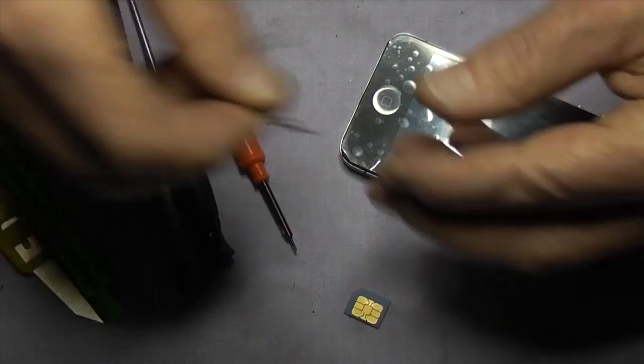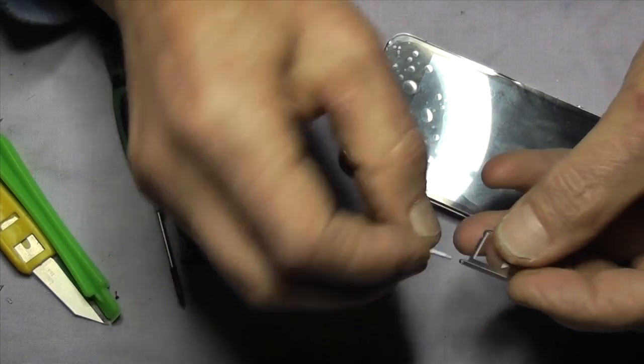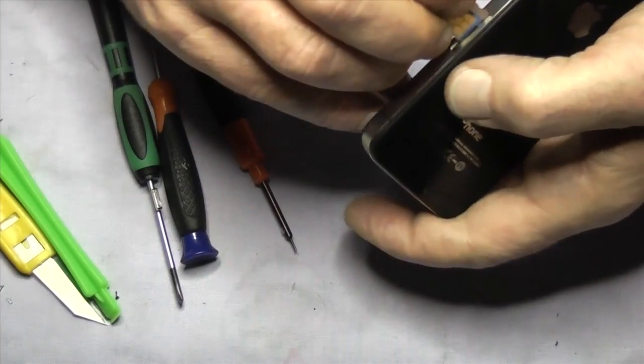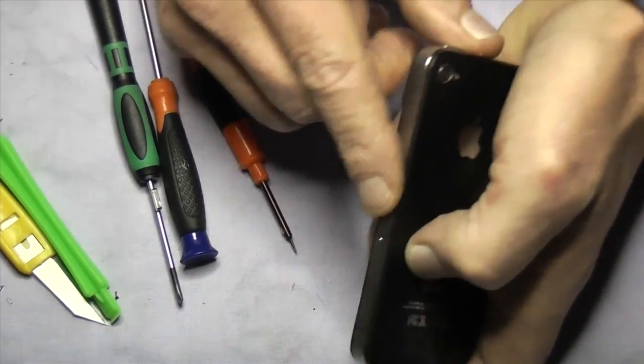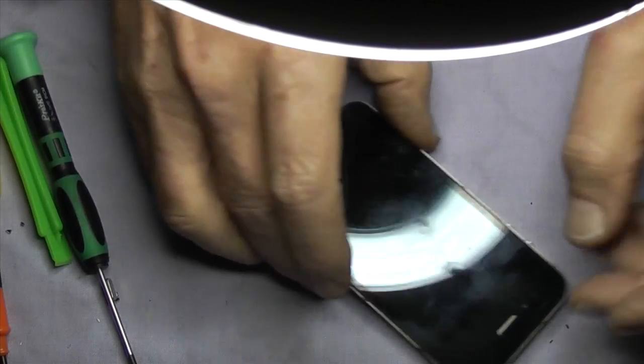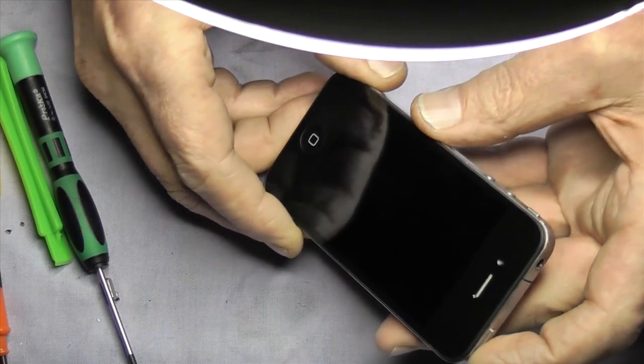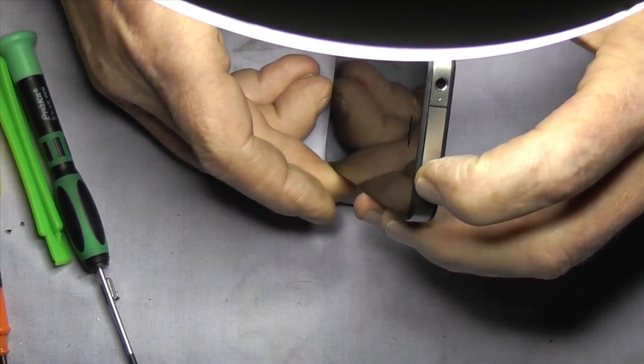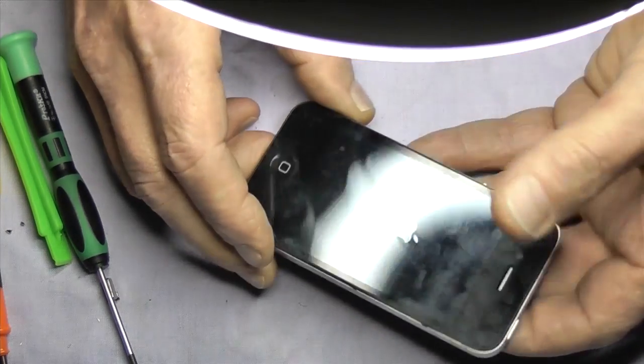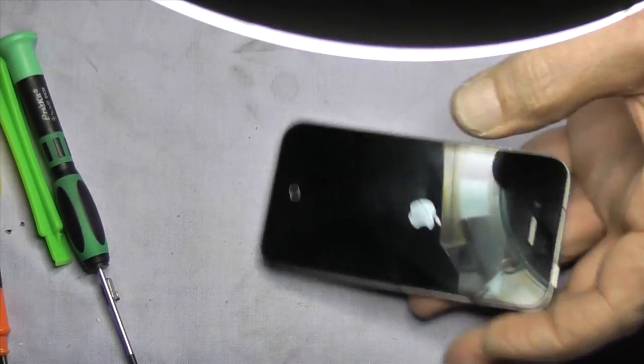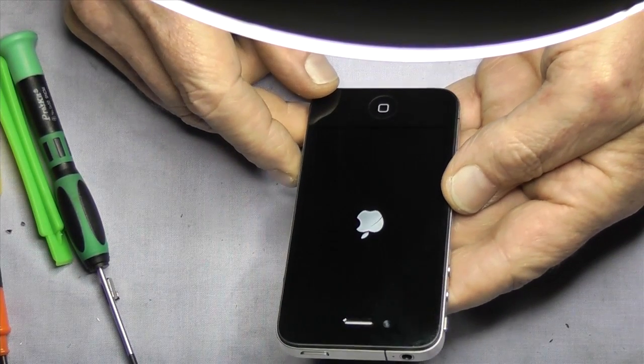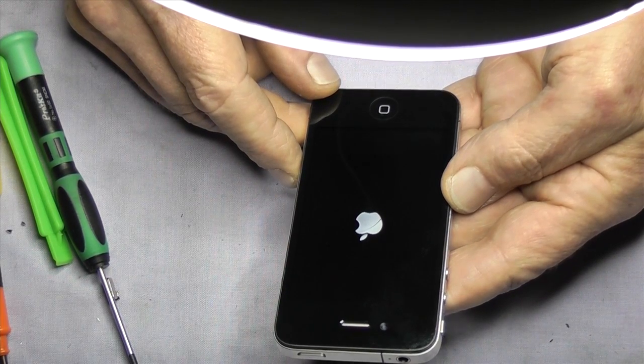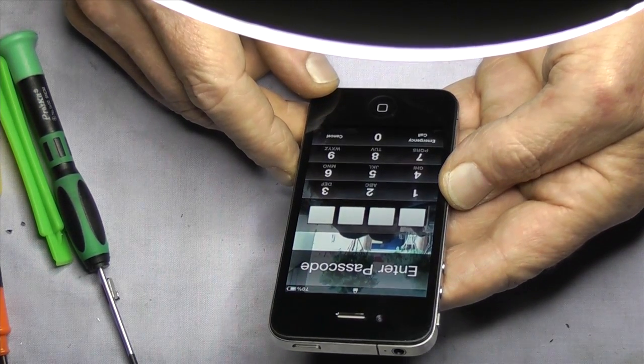So we've just got the SIM card to put in now. And test. So we'll be testing camera, Wi-Fi, and obviously the telephone side. So we'll switch her on and wait for her to boot. I'm going to speed this through a bit because obviously boot up takes a while. It's always satisfying when you get the Apple logo. Anyway, if you've enjoyed this video, please subscribe to me. I will be putting other videos up. Anyway, take care. Bye-bye.